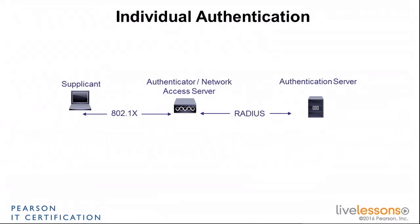And then there's the place where the authentication is going to be conducted, and that's called the authentication server. So with 802.1x, the supplicant tries to access the network via the authenticator. The authenticator is going to block the communication to the network and just relay traffic using one possible protocol, which is RADIUS — but there are a few others allowed by this protocol — relaying these queries to the authentication server.